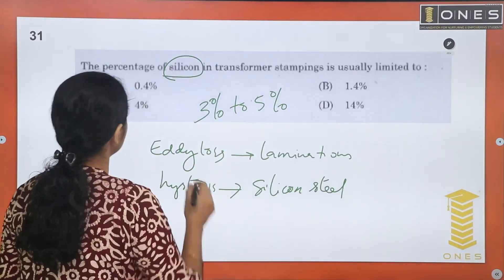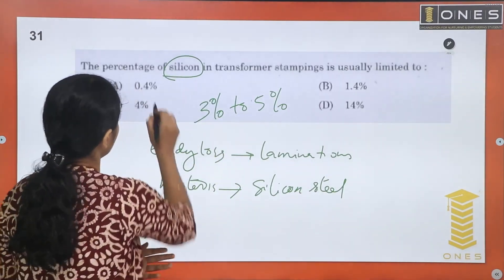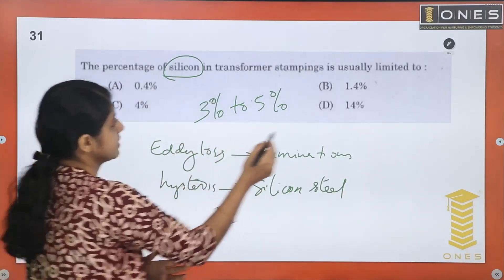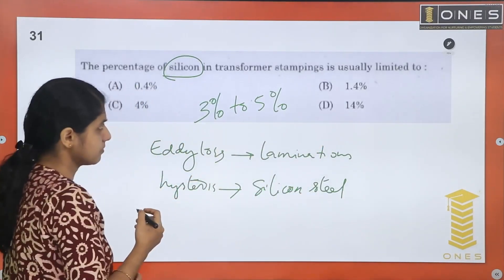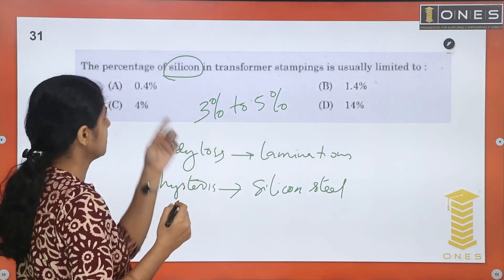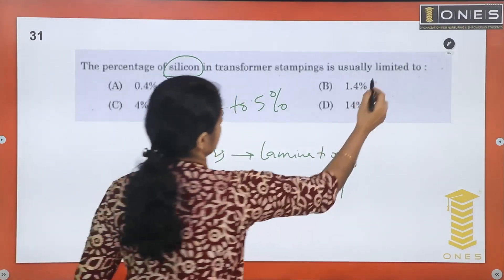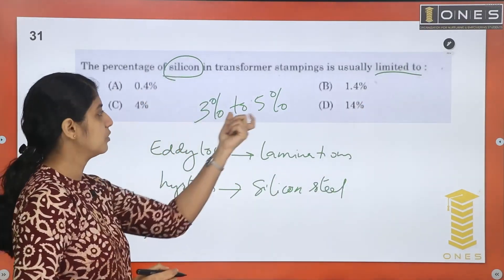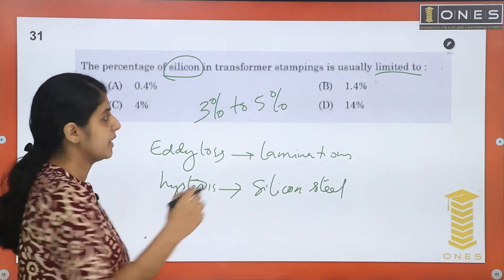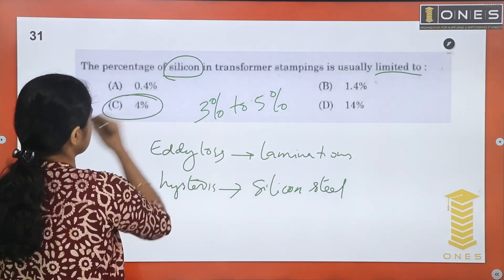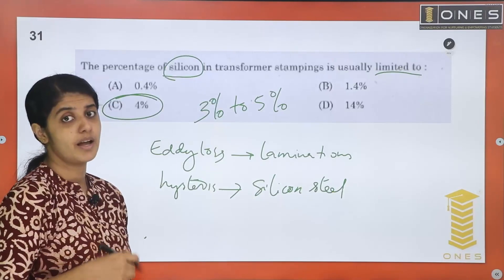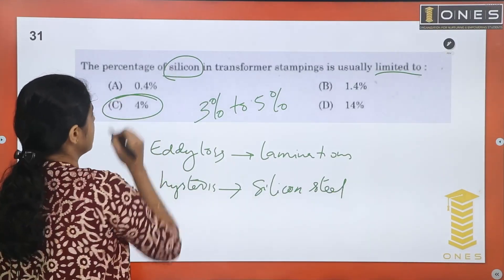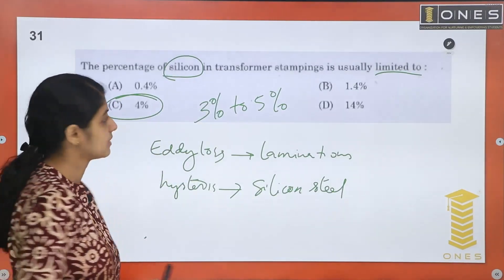The percentage is limited — we need to add 3 to 5 percent silicon. If you add beyond 5 percent, it adds about 4 percent and the material becomes brittle. Option C is the answer: silicon percentage is limited to 4 percent.